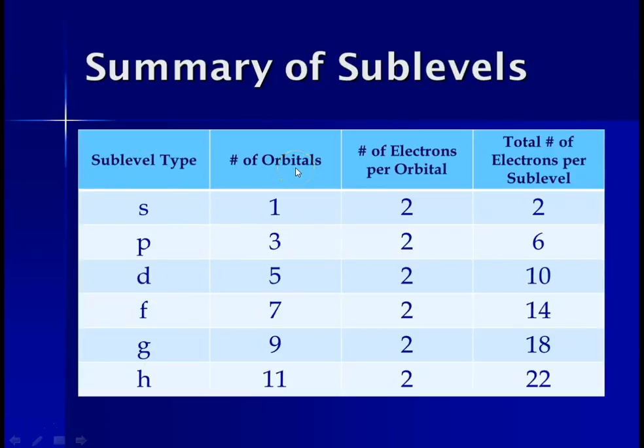The number of orbitals at each sublevel, and then the number of electrons per orbital, and that allows you to calculate the total number of electrons in a sublevel. So if we remember that the S has one orbital, each orbital, you'll notice all up and down here, each orbital can always only hold two electrons, so one orbital times two electrons is two. The P sublevel has three orbitals, again, times two electrons per orbital. The maximum a P sublevel can hold is six.